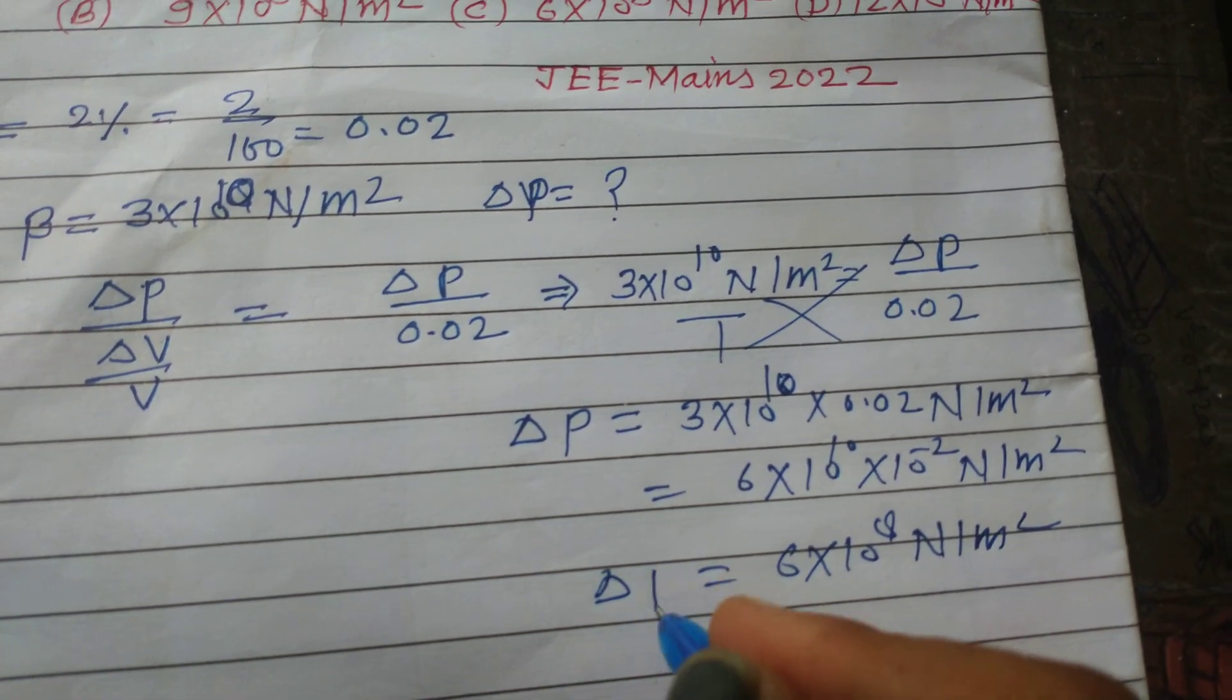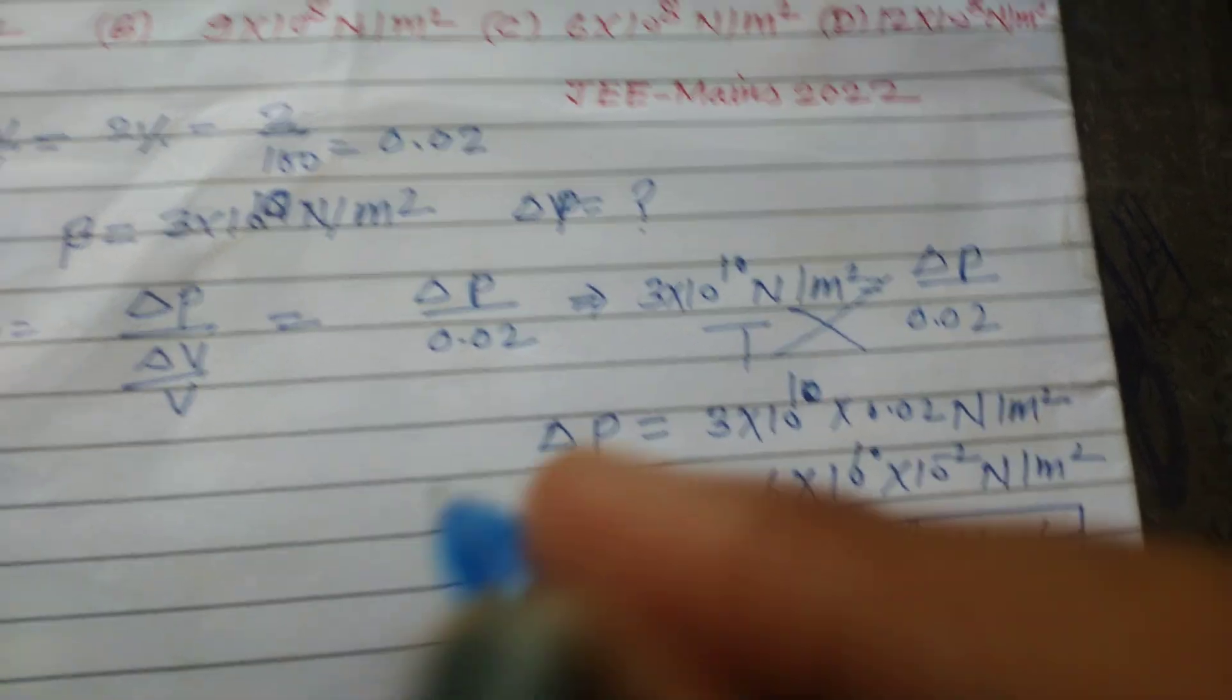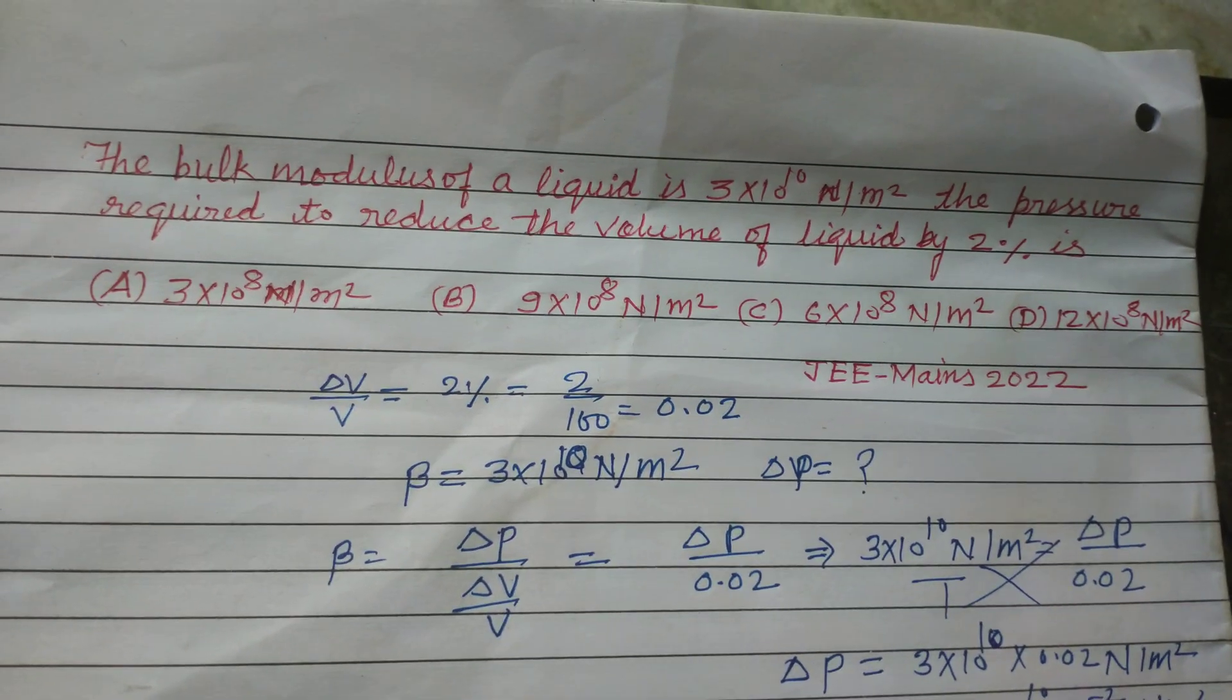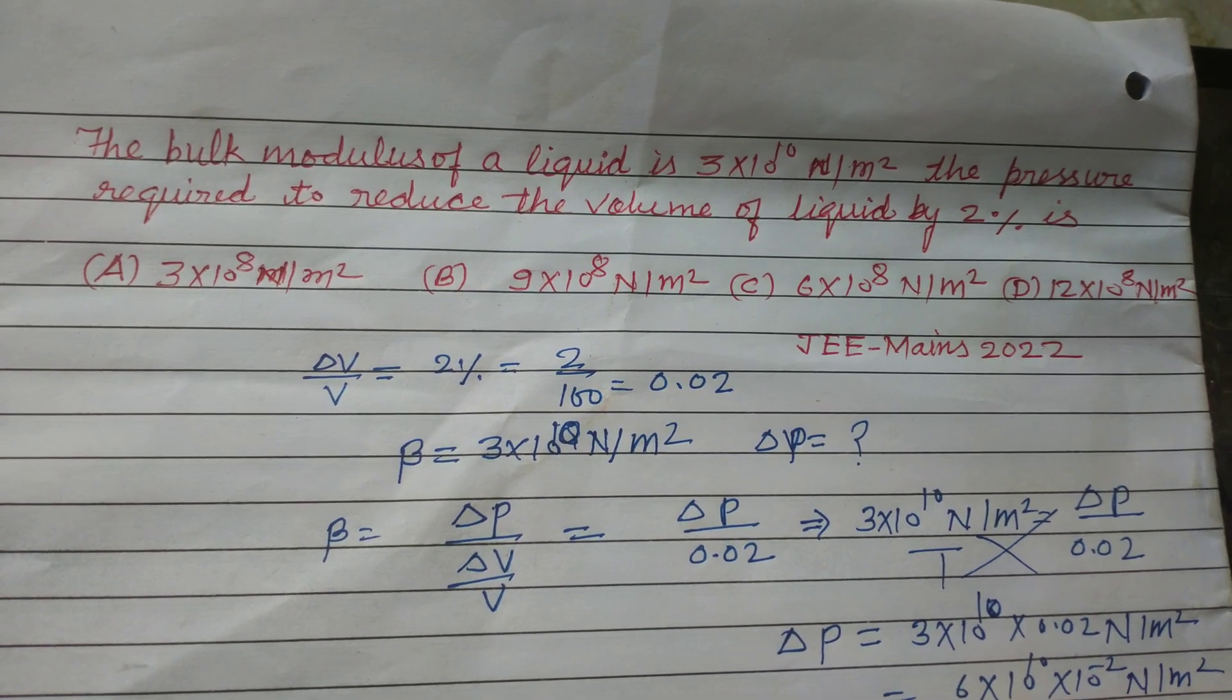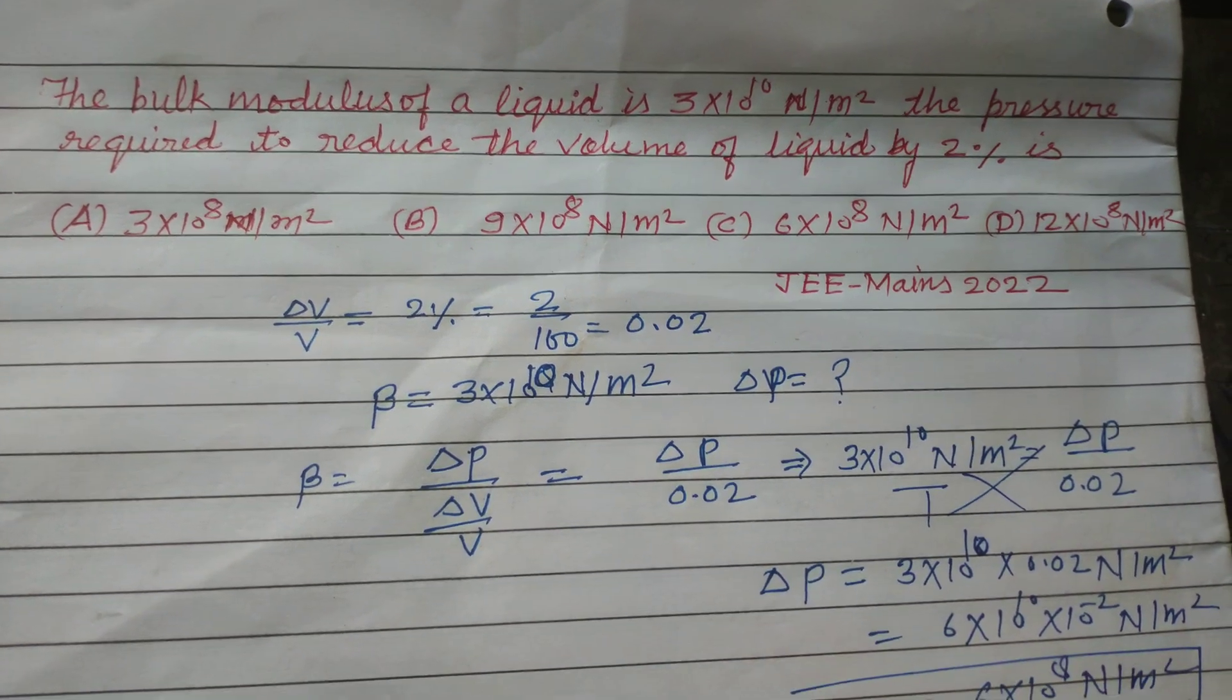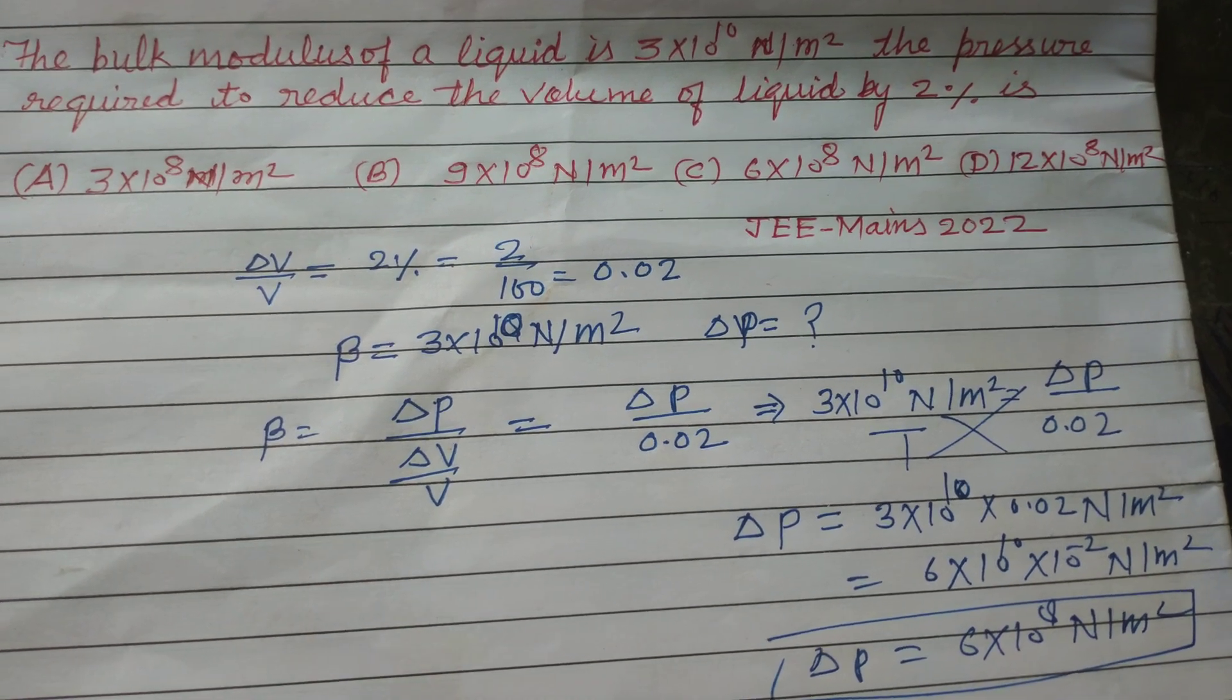So this is the required pressure in bulk modulus to reduce the volume by 2%. In this way we solve this problem. I hope you got it. Thanks for watching.